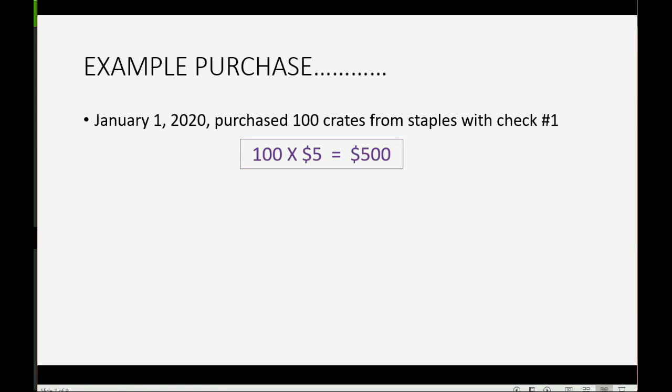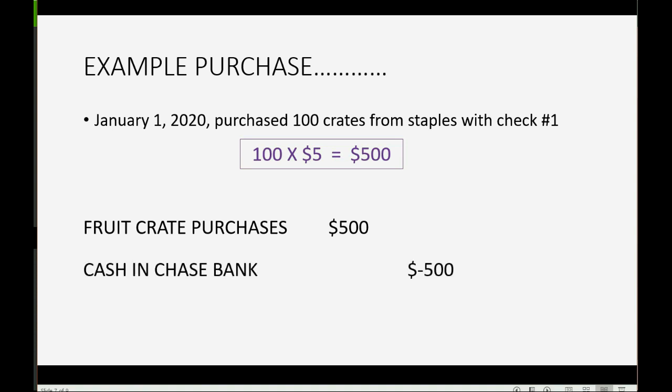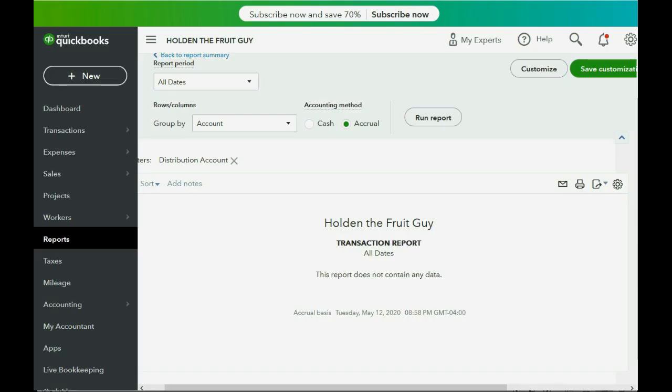The question is, what will show up on the Trial Balance when we record this check? Fruit Crate Purchases — the expense account that tracks the total we paid for the fruit crates — will show up for $500. At the same moment, Cash and Bank will show a negative $500, because QuickBooks Online thinks we have $0 in cash. So if we write a $500 check, it will show up as negative. The Trial Balance will look very similar to this after we record our first check purchasing the non-inventory part.